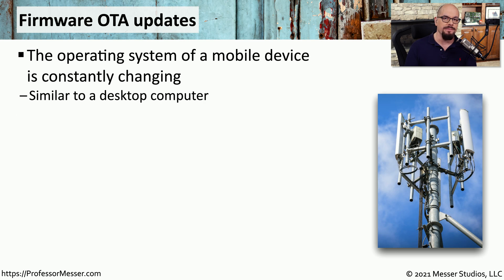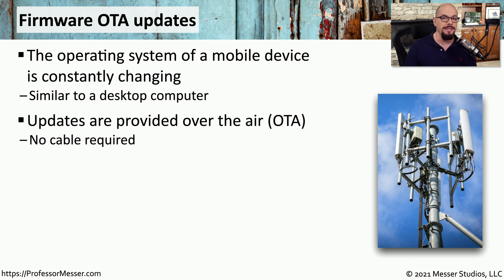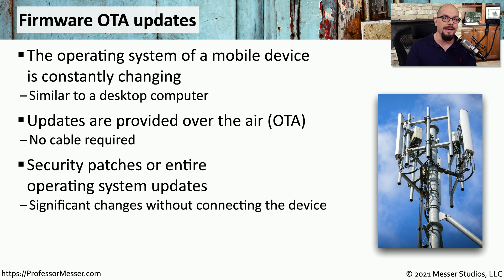The operating systems of our mobile devices are constantly being updated — sometimes with feature updates, other times with security patches. Whenever your system needs to be updated, it's often receiving these updates over the air, or OTA. This means you don't have to plug it in or download any software; updates are automatically pushed down to your mobile device when they're ready. You'll often see a message pop up saying a new version of firmware is available — you can install it now or install it overnight, so you wake up in the morning with a brand new version of firmware with all the new features.